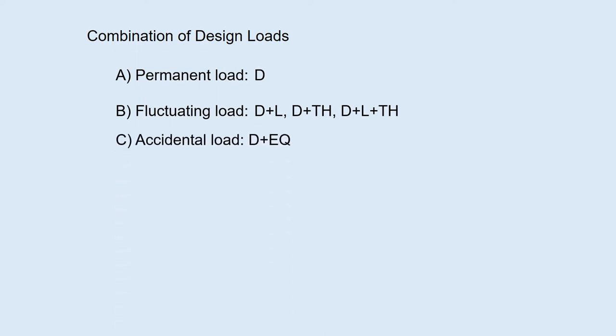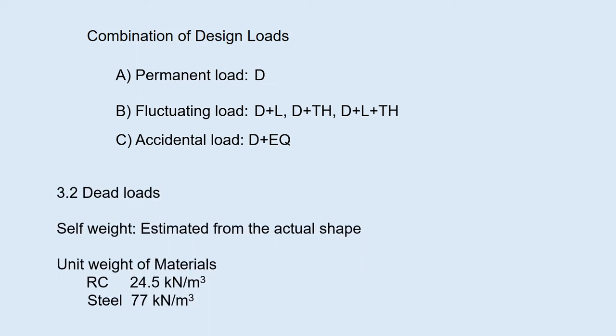A structure is subjected to not only one design load but also two or more loads. So, you have to consider the combination of these design loads such as: A is a permanent load case where only dead load is considered. B is a fluctuating load case where D plus L, D plus TH, D plus L plus TH are considered. C is the accidental load case where D plus EQ is considered.